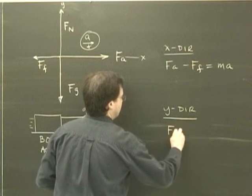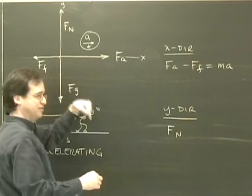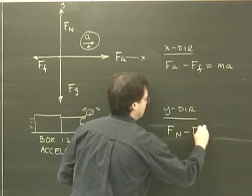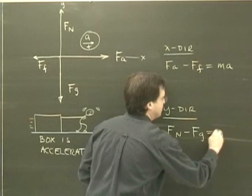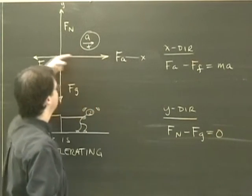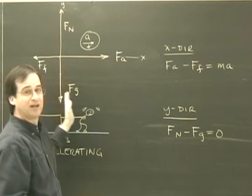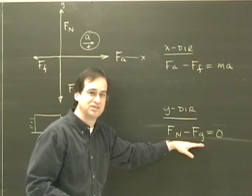So F_N is going to be positive and F_g is down, so it's going to be negative. F_N minus F_g is going to add up to zero. Because we said it's accelerating to the right, it's not accelerating up or down. So this will always add up to zero.